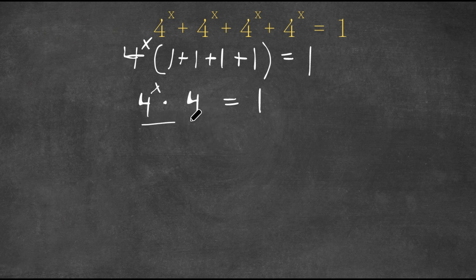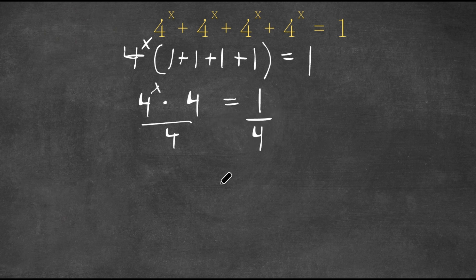I'm going to divide both sides by 4. These two would cancel out, and I'm left with 4^x = 1/4.